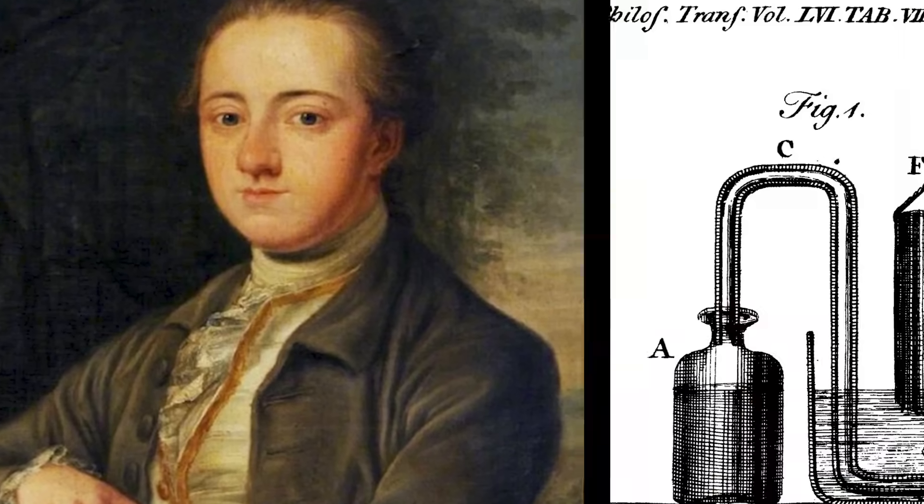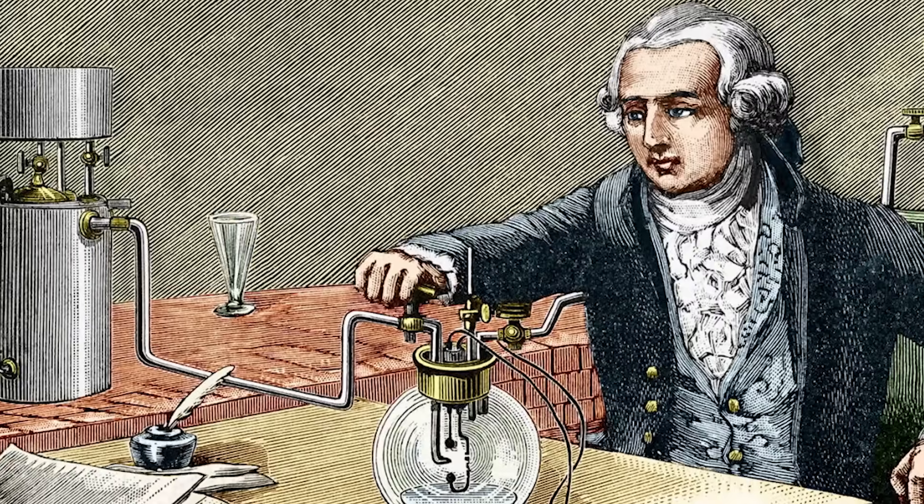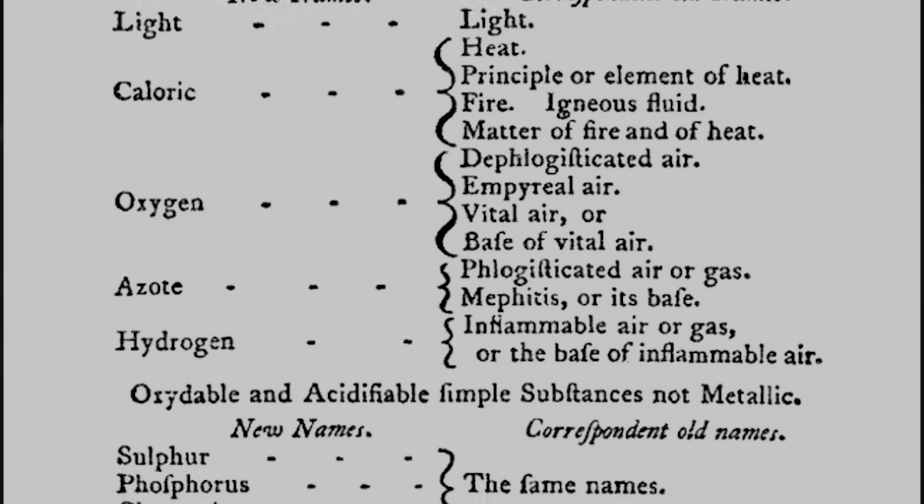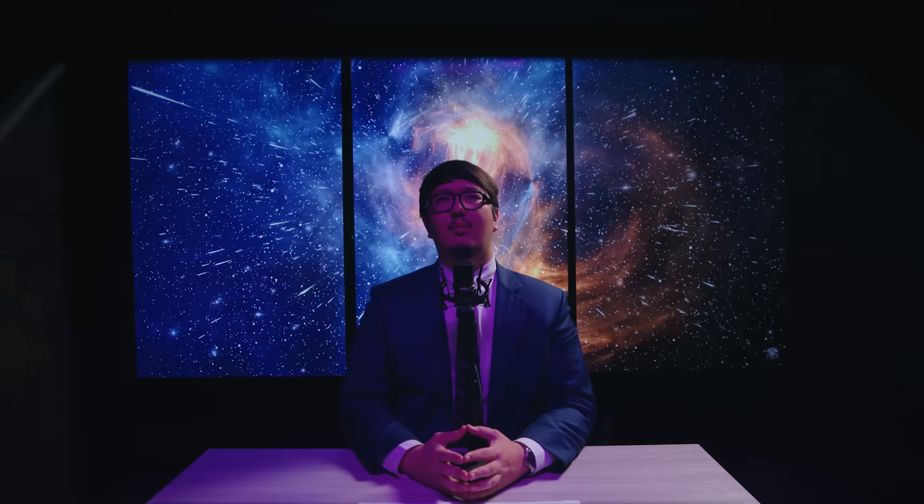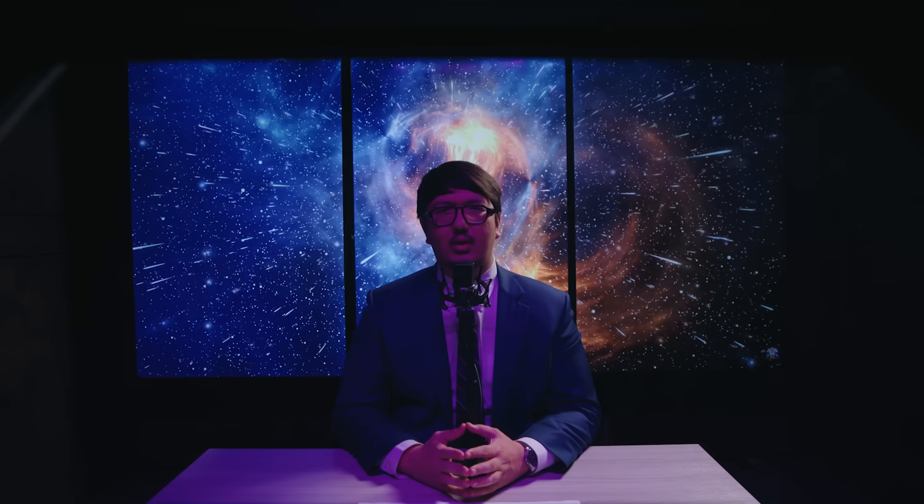This isn't the only case where priority had been contested. Take the discovery of hydrogen, for example. Henry Cavendish isolated the element in 1766 and described its properties in great detail, but it was Antoine Lavoisier who gave it the name hydrogen and incorporated it into his revolutionary new chemical nomenclature. Meanwhile, Joseph Priestley, working independently, also contributed to its identification. Each played a part. Yet for decades, textbooks debated who discovered hydrogen. Science is rarely a one-man show. It's a grand relay of minds across time, building, borrowing, and often overlapping.